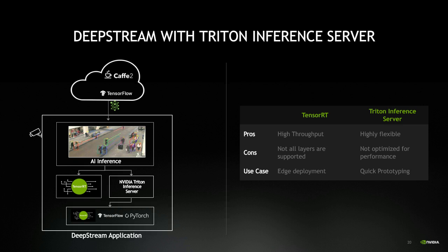If you want the flexibility of running any network out of the box — for example when prototyping and experimenting with architectures — Triton Inference Server is the correct approach. You get all the benefits of an efficient DeepStream pipeline while using Triton for inferencing without the overhead of converting to TensorRT. For production deployment where you want the highest performance, we recommend converting the model to TensorRT.